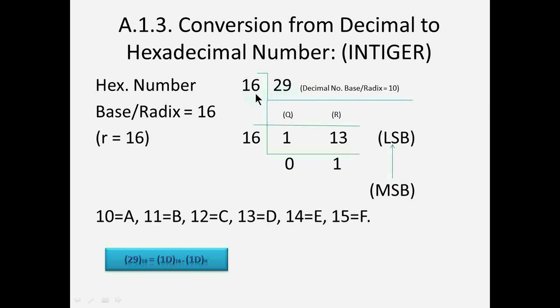Now divide 29 with 16, coefficient will be 1 and remainder will be 13. Again divide 1 by 16 but 1 is not divisible by 16. So this 1 will come here in remainder portion.